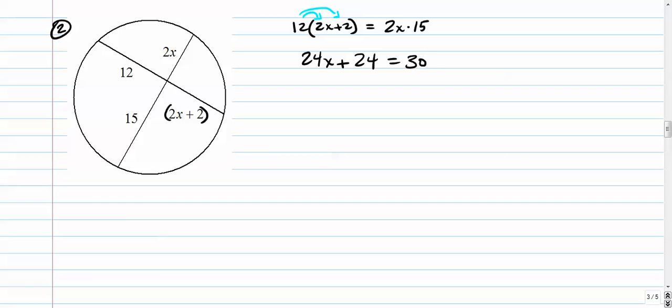When we have variables on both sides, I always say look which one is bigger. This one is definitely bigger, so I'm going to keep that one where it is and move the smaller one over by doing its inverse. 30X minus 24X is 6X equals 24. We're going to divide, so X is 4.